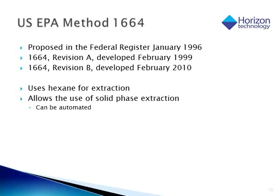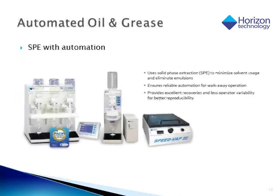After a lot of work finding the optimum solvent, hexane was decided to be the solvent of choice, and EPA Method 1664 was developed. It was first proposed in the Federal Register in January 1996, then developed and revised into Revision A and Revision B. It uses hexane for extraction and allows the use of solid phase extraction, which can be automated. Here we show some of the equipment that could be used to automate a solid phase extraction for oil and grease. It also includes an evaporation step — the SpeedVap device automates that step as well, so the entire process can be automated when solid phase extraction is incorporated.